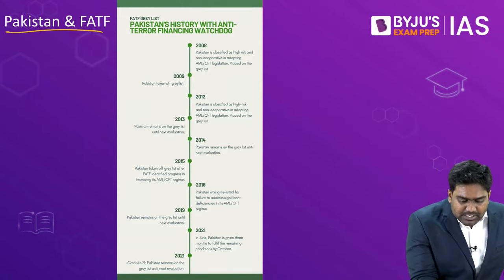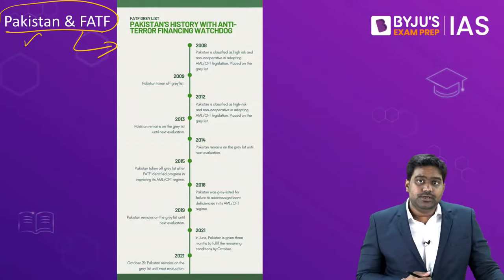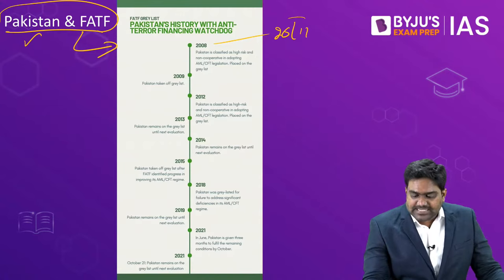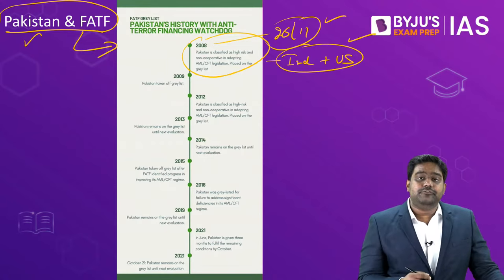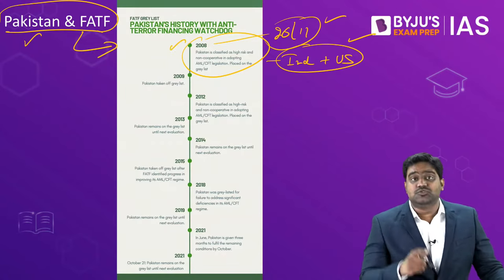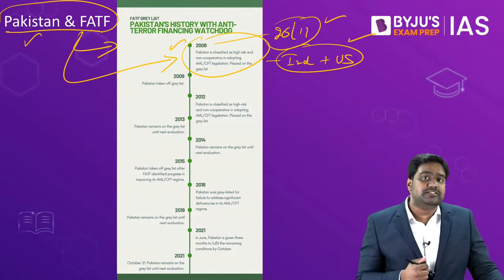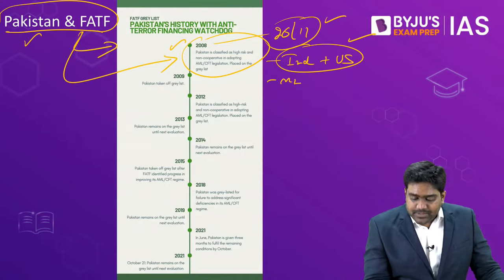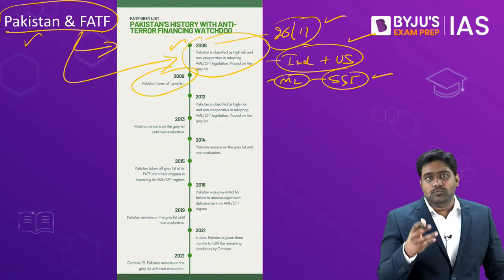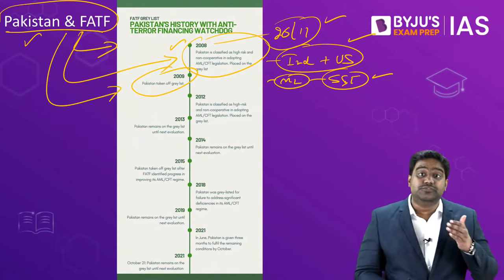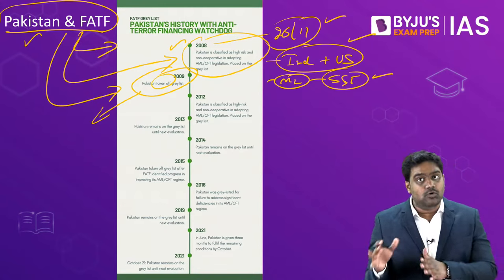This becomes very important because Pakistan has been on the grey list of FATF for many years. After the 26/11 Mumbai attacks, India and the US jointly put pressure on FATF, using their influence to ensure Pakistan was placed on FATF's grey list, as Pakistan was not serious about combating terrorist financing and had become a state sponsor of terrorism. From 2008 to 2009, Pakistan was on the grey list for the first time. It showed some progress and was removed from the grey list.